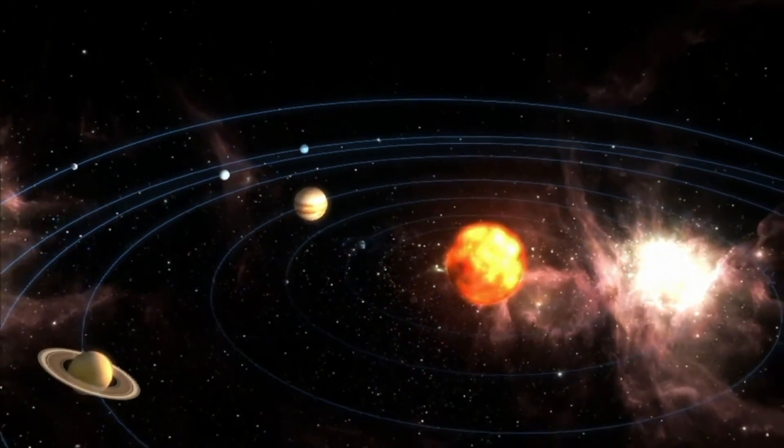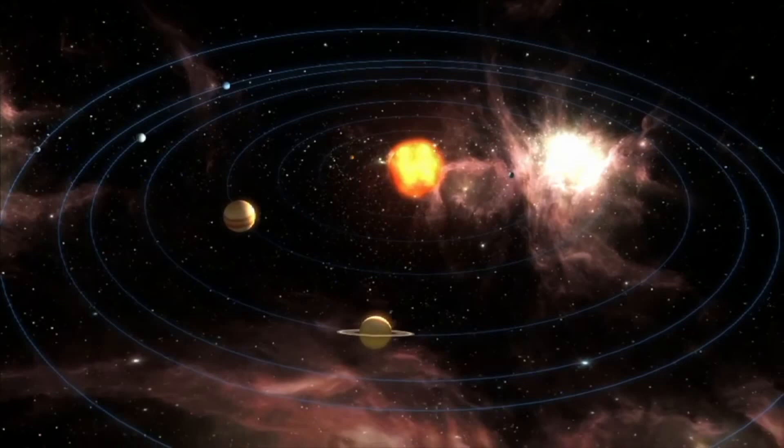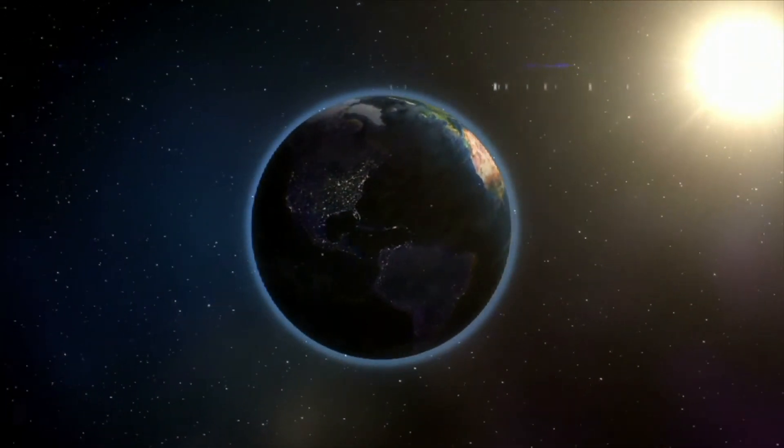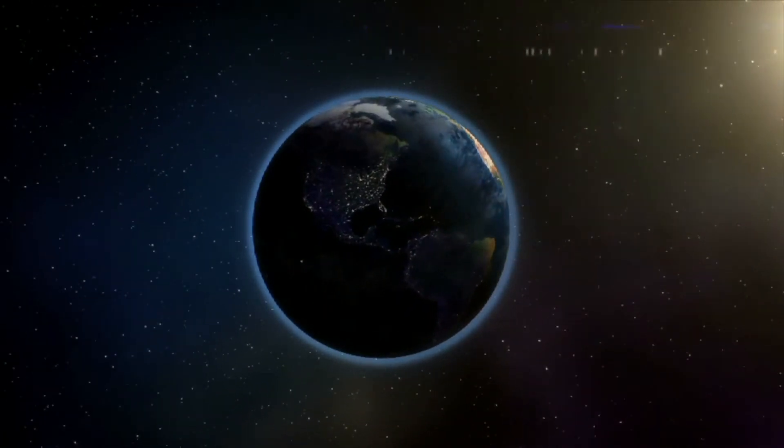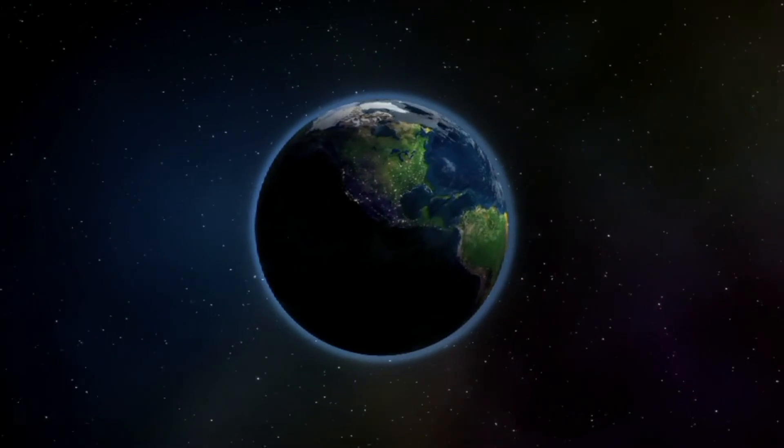We measure time based on how long it takes a planet to orbit the Sun. It takes the Earth 365 and one-quarter days to complete its orbit. This is also called an Earth year.